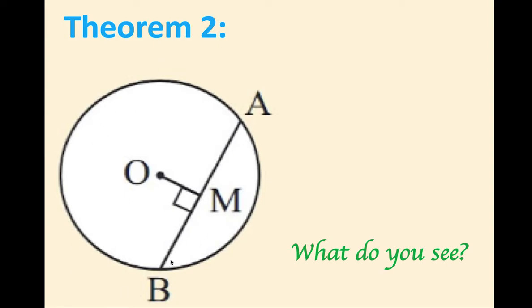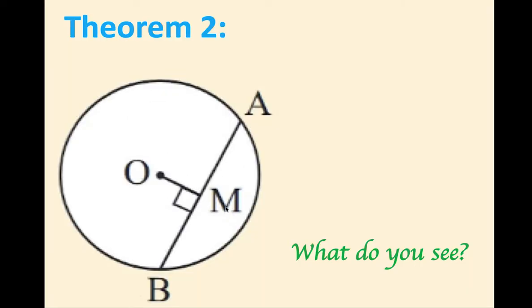Theorem two is about this diagram. We have a circle, we have a chord, and I see a 90 degree angle. What do you see? In your own words, describe what conclusion you can make based on what you see here. Let's take a look in GeoGebra again for this one. We're going to recreate this diagram — follow these steps. Jump into GeoGebra and follow the same steps to construct this diagram. By constructing this diagram, we'll be able to make a conclusion.